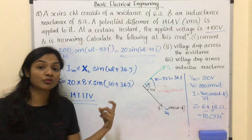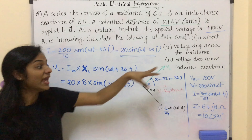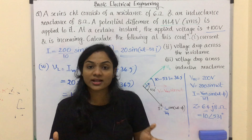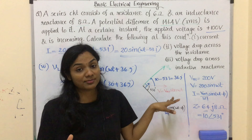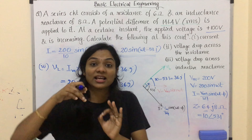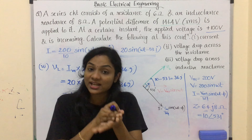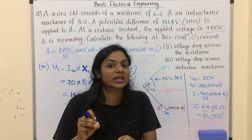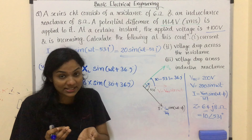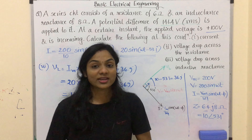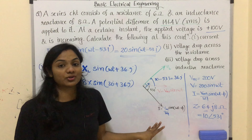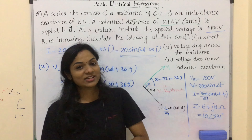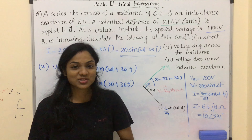This is the value of voltage drop across the inductive reactance. In the case of resistance, no phasor diagram is needed because the voltage drop across the resistance and the current are in phase — 0° phase difference. I think this question is clear. If you have any doubt, please feel free to comment in the comment section. We will see you in the next video. Thank you.